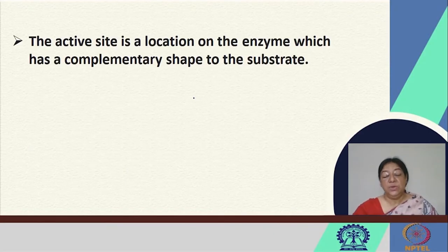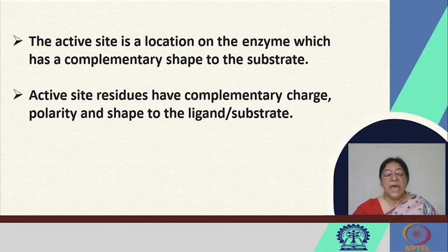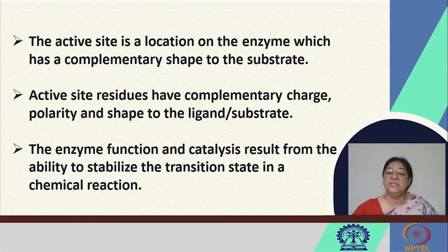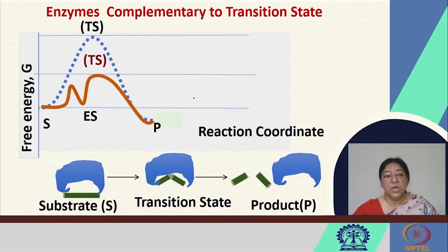The active site is a location on the enzyme that has a complementary shape to the substrate, and active site residues have complementary charge, polarity, and shape to the ligand substrate. Enzyme function and catalysis result from the ability to stabilize the transition state in a chemical reaction. This is what is important. So if we have enzymes that are complementary to the transition state, let us see how the reaction can proceed.